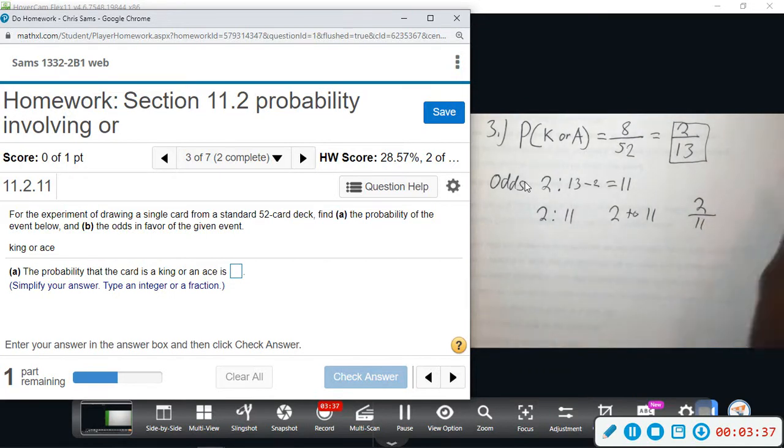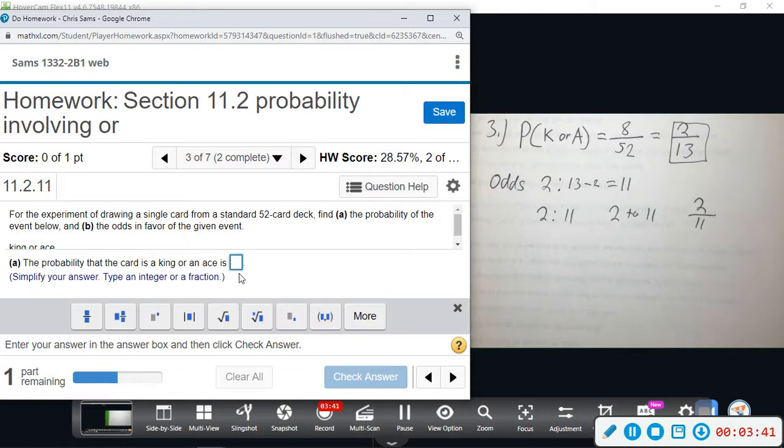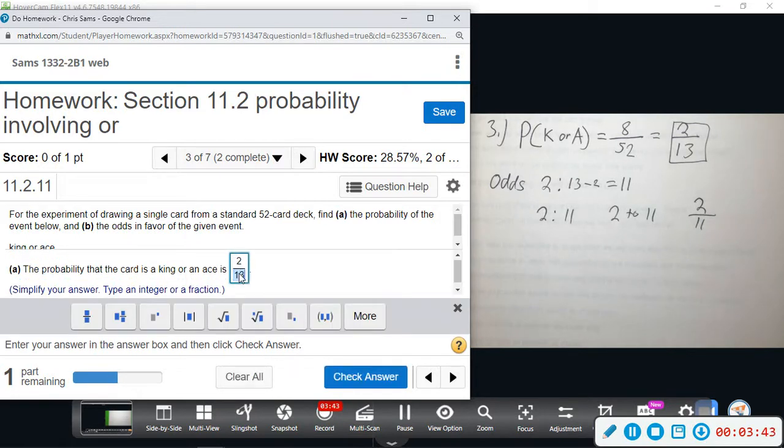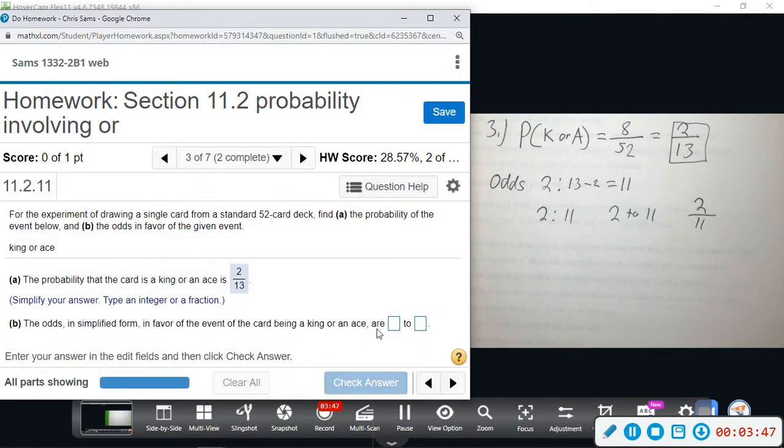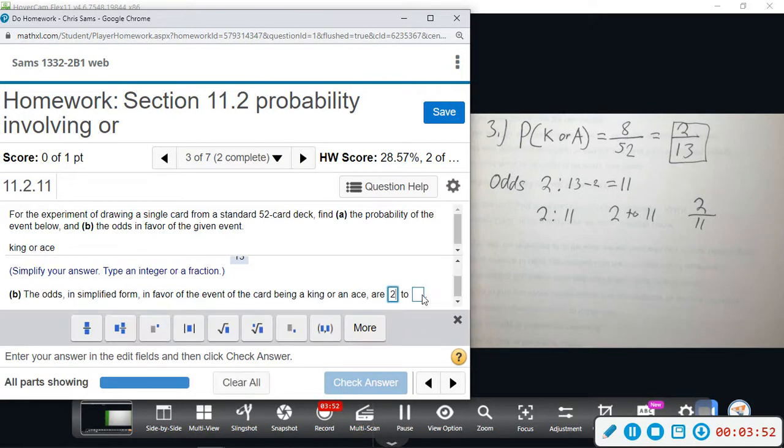Okay, so first we want the probability, which will be two divided by thirteen. And next we want odds, so they're writing it in this form. Alright, so two to eleven.